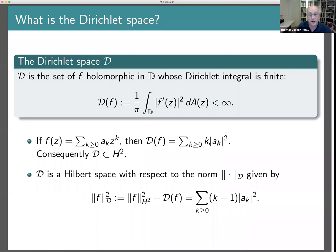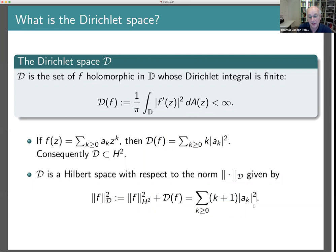The Dirichlet space is practically a Hilbert space with this expression for the square of the norm. There's a slight technicality: the constant functions would have Dirichlet integral zero, giving only a semi-norm. To get a real norm, it's usual to add something on, and the most common choice is to add the square of the H² norm of f. That gives you the full expression for the squared norm, and a genuine Hilbert space.